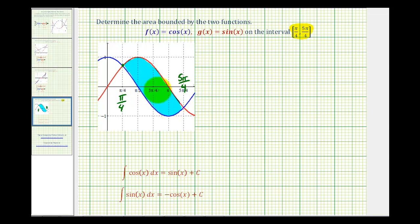The area of the bounded region on this interval would be equal to the definite integral from pi over four to five pi over four and the integrand has to be the top function minus the bottom function, so we'll have sine x minus cosine x.